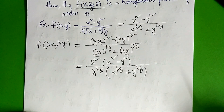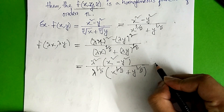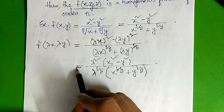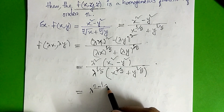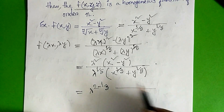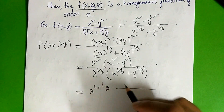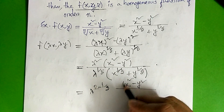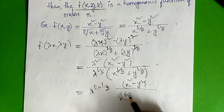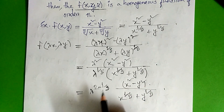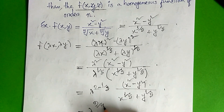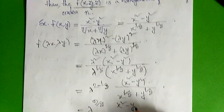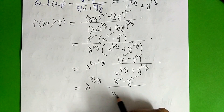So we can see that lambda is easily available. This is an easy example, but we can do some examples. Here we can see lambda 2 minus 1 by 5. So we can see that lambda power is equal to 1 by 5. We can see that lambda power is equal to 3 and minus. So this is 9 by 5.